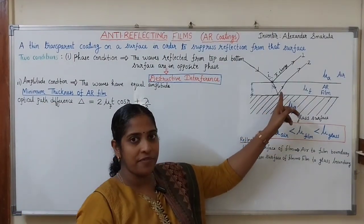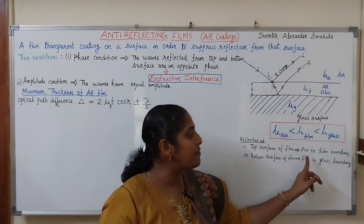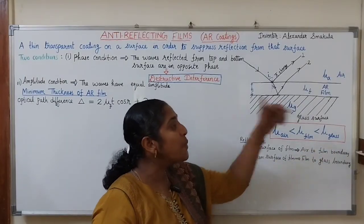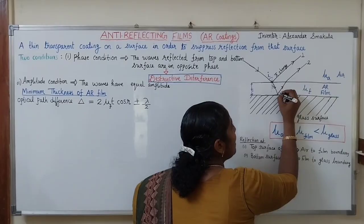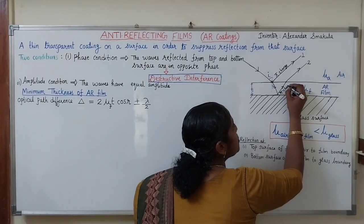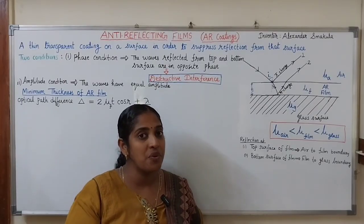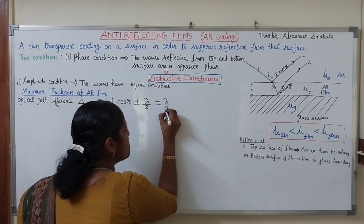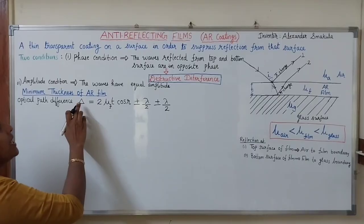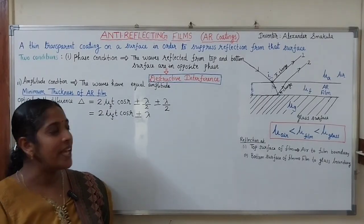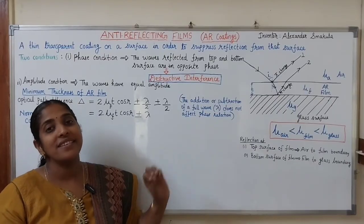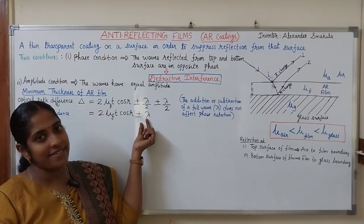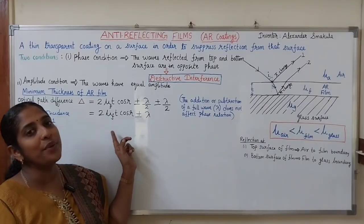At the bottom surface of the film, the boundary is film-to-glass. Since the film refractive index is less than the glass refractive index, the light is again reflected at a rarer-to-denser boundary. So again, a phase change of π and a path correction of λ/2 occurs at the bottom surface too. The complete path difference becomes 2μT cos R ± λ. Since the addition or subtraction of a full wavelength λ does not affect the phase relation, we can neglect the ±λ, and the path difference becomes Δ = 2μT cos R.